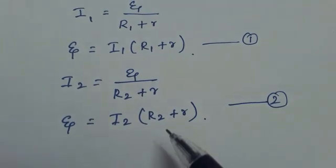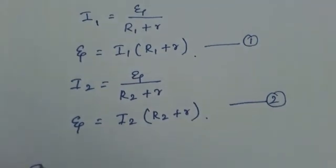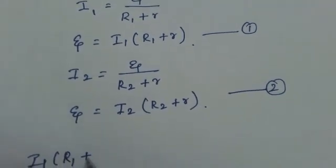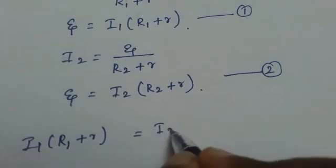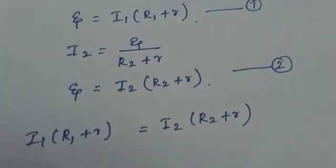Now in both the cases the EMF is same. So we can equate the equation. So what you can write I1 into R1 plus r is equal to I2 into R2 plus r.